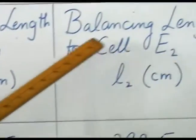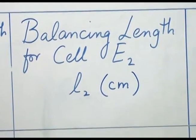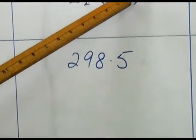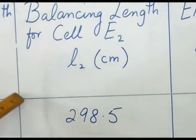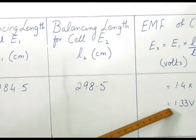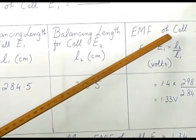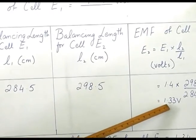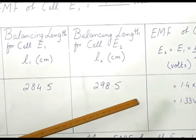Then, balancing length for cell E2, which is L2, it is 298.5 centimeters. Now, putting these values, all these three values in this formula, we have found out that the value of E2, that is, EMF of the cell E2, it is 1.33 volts.